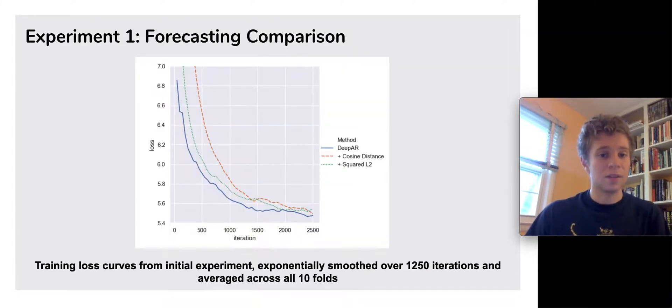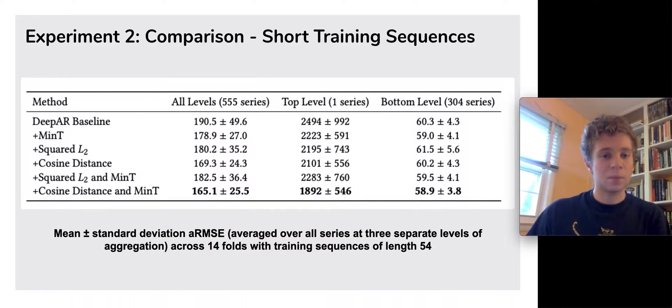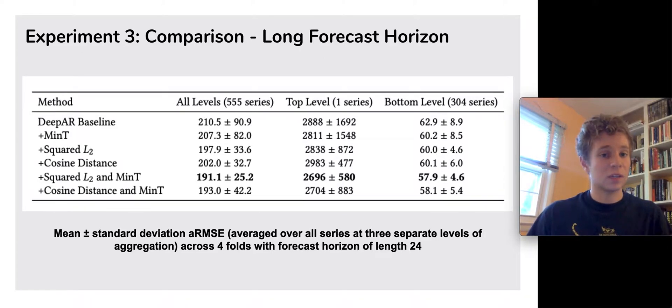We also saw that our method induced a slightly higher training loss, which was evidence that it helped prevent overfitting on individual series. Our paper contains two more comparisons from two challenging forecasting settings: training sequences that are half as long, and a forecast horizon that is twice as long. Feel free to reference the paper for more details.